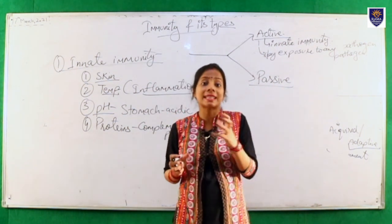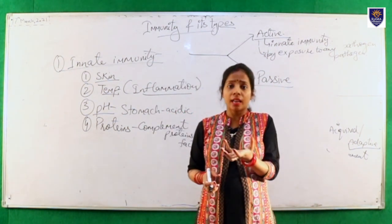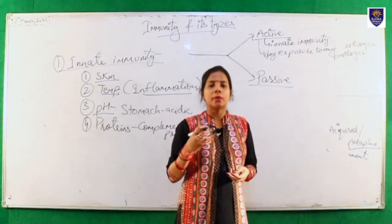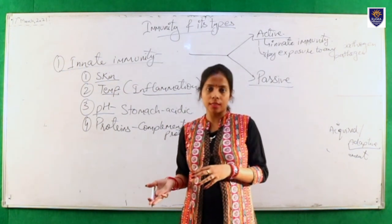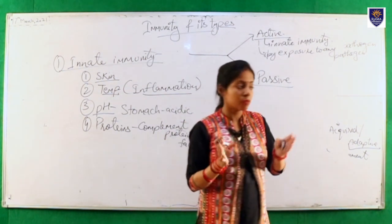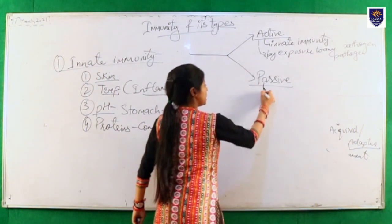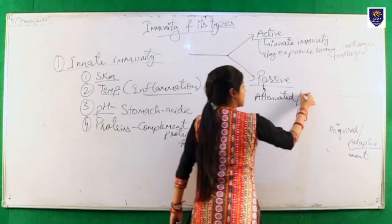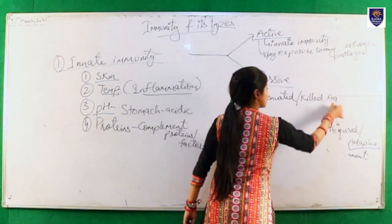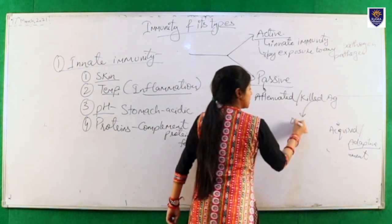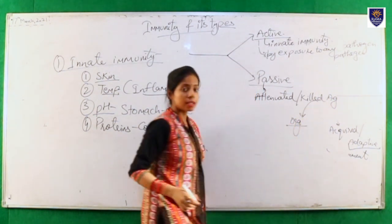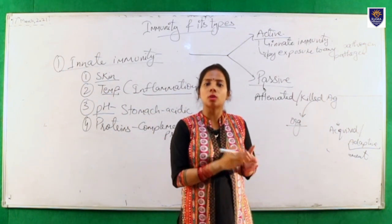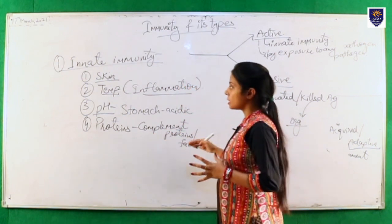The second type is passive innate immunity. You must have heard about vaccines. In a vaccine, we provide artificial immunity to the body. If we provide an attenuated or killed pathogen or antigen to an organism so that it becomes resistant to that particular disease, that type of immunity is known as passive innate immunity.